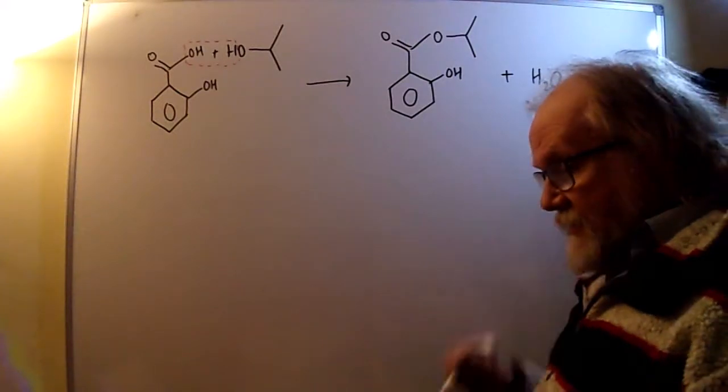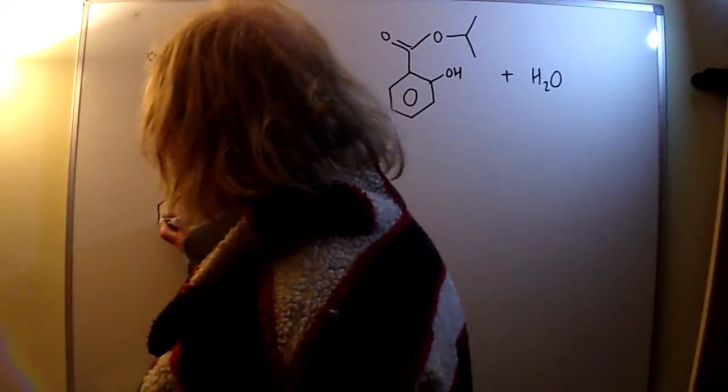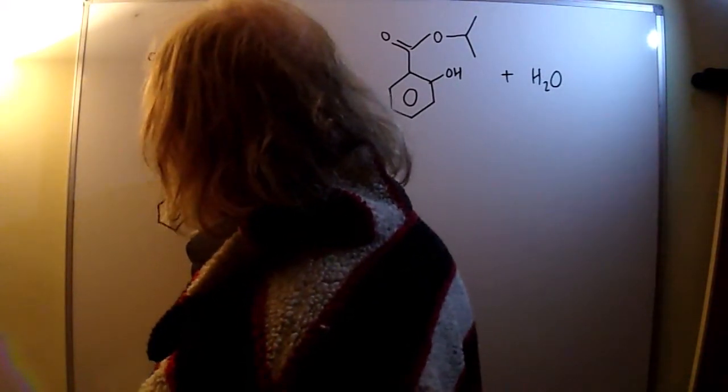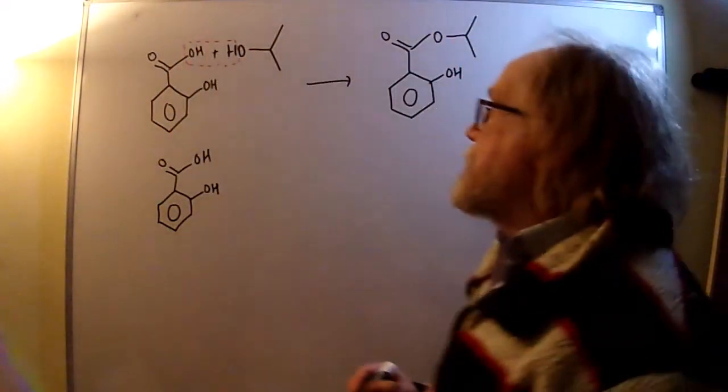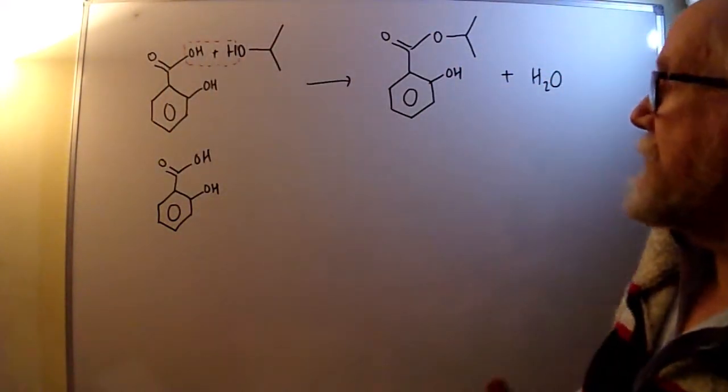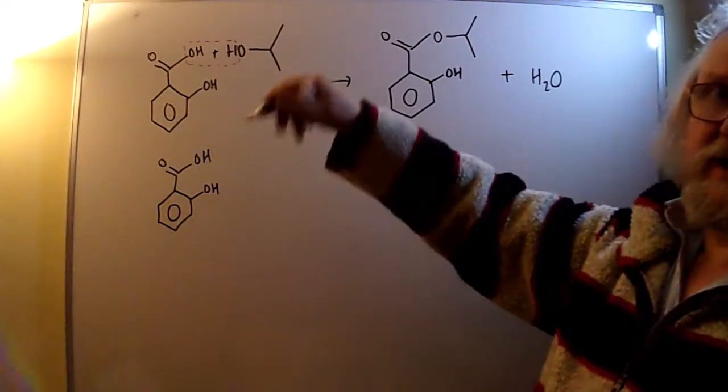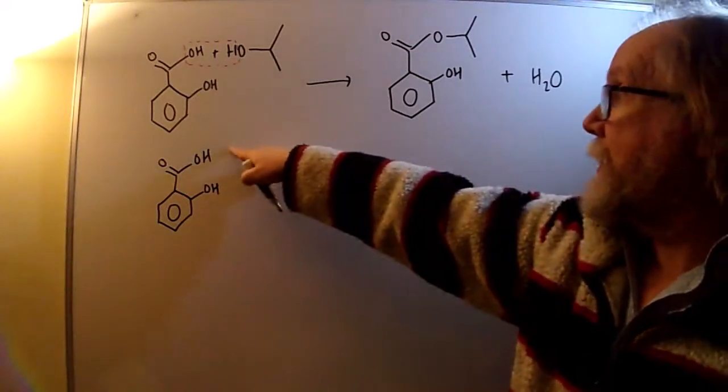The second one asks us what happens with aqueous sodium hydroxide. So again, we've got this. And again, we have to look at both functional groups and say, will they react with sodium hydroxide? Well, of course, carboxylic acid will. Acids plus alkali goes to salt plus water, so we know that is.